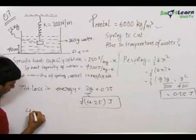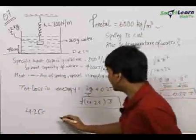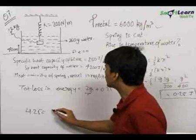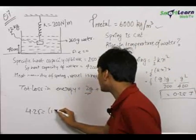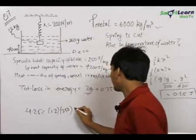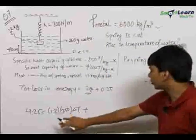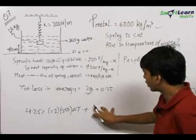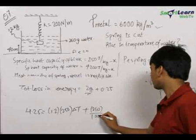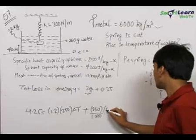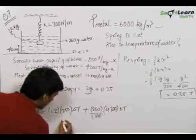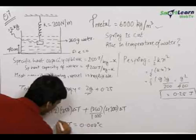Let the rise in temperature be ΔT. Then: 4.25 = (mass of block × specific heat of block × ΔT) + (mass of water × specific heat of water × ΔT). That is: 4.25 = (1.2 × 250 × ΔT) + (260/1000 × 4200 × ΔT). Solving this equation gives ΔT = 0.003 °C.